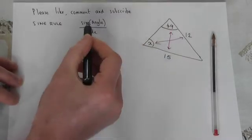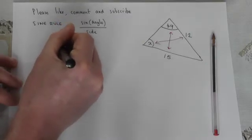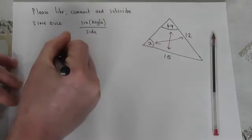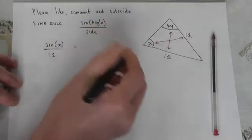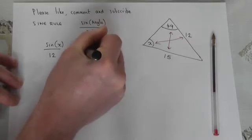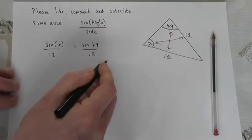So to find an angle we're told that sine of the unknown angle over its opposite side must equal sine of the known angle over its known side.